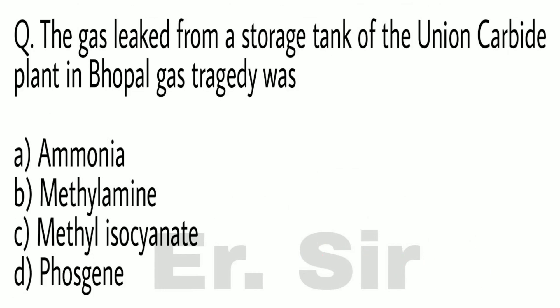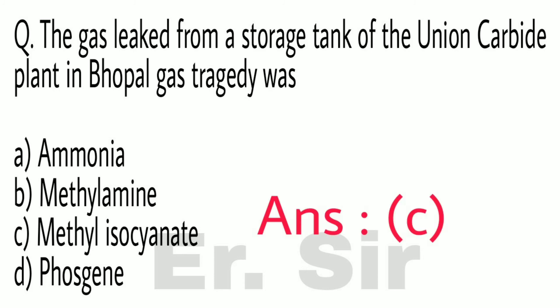The gas leaked from a storage tank of the Union Carbide plant in Bhopal gas tragedy was — (A) Ammonia, (B) Methylamine, (C) Methylisocyanide, (D) Phosgene. The correct option is C: Methylisocyanide.